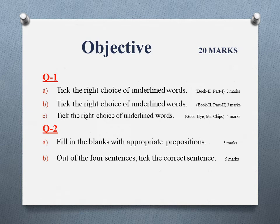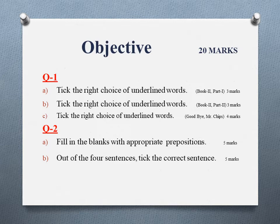The synonyms in Question 1 are taken from Part One and Part Two of Book Two, and then four sentences will be taken from the novel Goodbye Mr. Chips. Question number one will be of ten marks. Then comes Question number two, where you have to fill in the blanks with the appropriate preposition, and it carries five marks. The last part of Question 2 is 'choose the correct sentence,' where there may be errors of tense, articles, prepositions, or adjectives, and you have to choose the right answer. It is worth five marks. In this way, your objective section is of 20 marks.